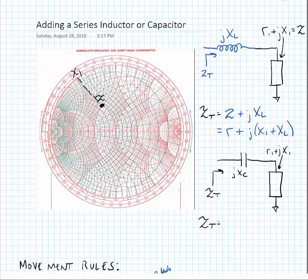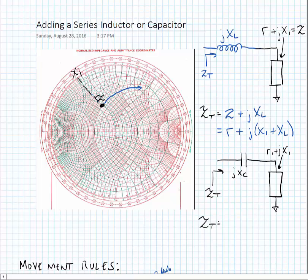The impedance ZT looking into the network is now R plus JX1 plus XL. Adding the inductor didn't change the real part of the impedance — it only changed the imaginary part. So if we look at how this triggers movement on the Smith chart, if we have an impedance labeled Z with reactance X1 read from the edge of the chart, adding the series inductance will move it on a line of constant resistance, increasing as we increase frequency or inductance towards the open circuit on the Smith chart.